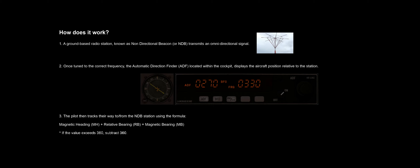So in a nutshell, how does it work? A ground-based radio station known as a non-directional beacon or NDB transmits an omnidirectional signal. Once tuned to the correct frequency, the automatic direction finder or ADF located within the cockpit displays the aircraft position relative to the station.